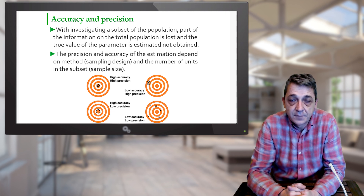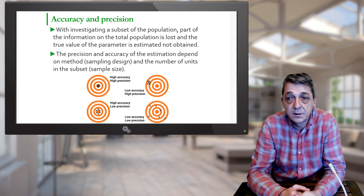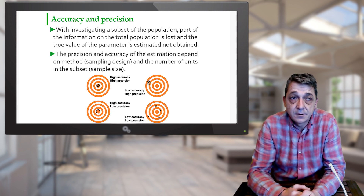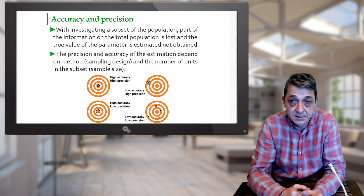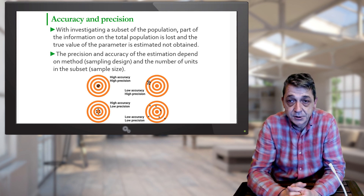The true value of the parameter of interest is not obtained but estimated. The precision and accuracy of the estimation depends on how the subset is acquired — that is, on the sample design — and on the number of units included in the subset, or the sample size. By definition, accuracy is the closeness of the measurements to a real value, whereas precision is the closeness of the measurements to each other.